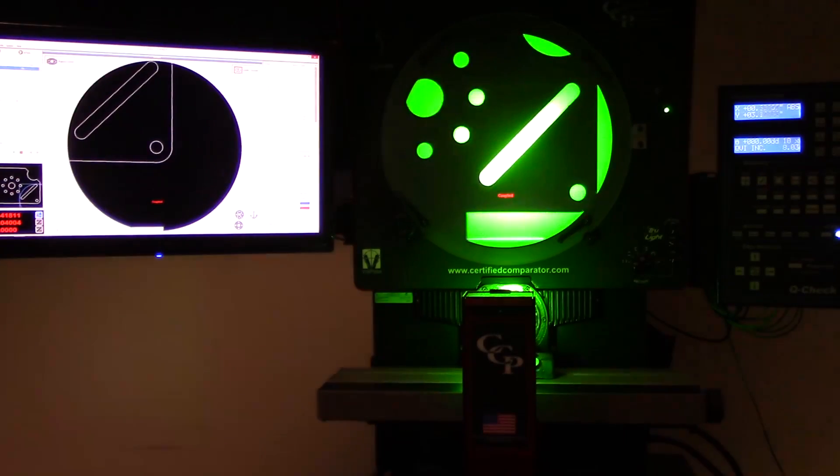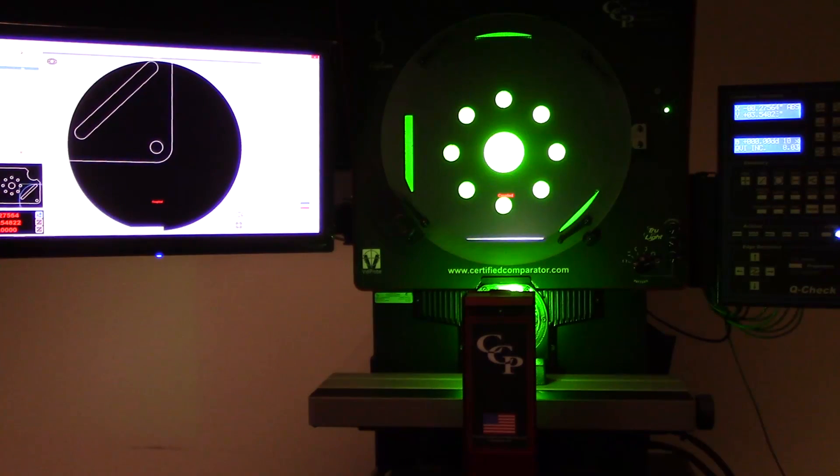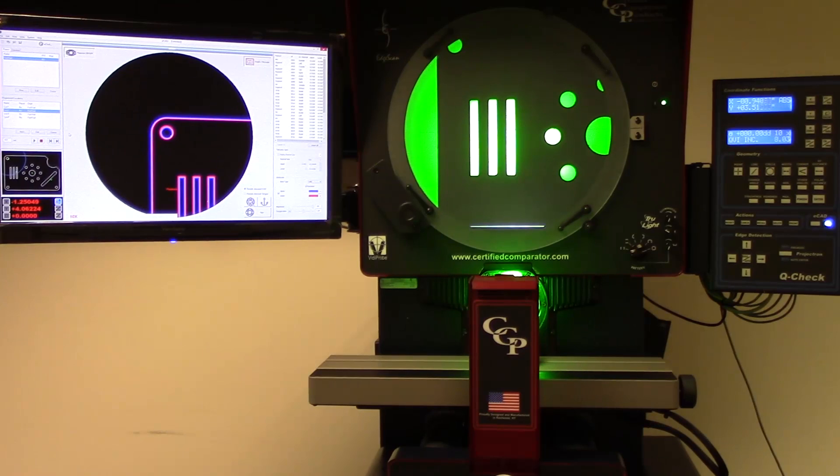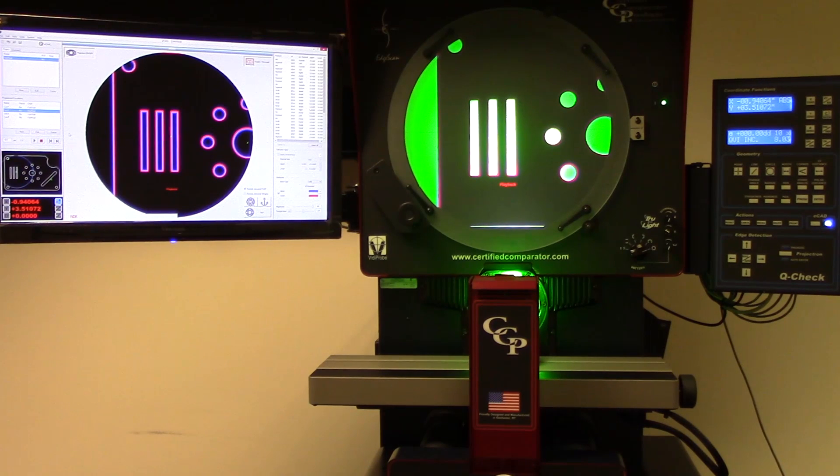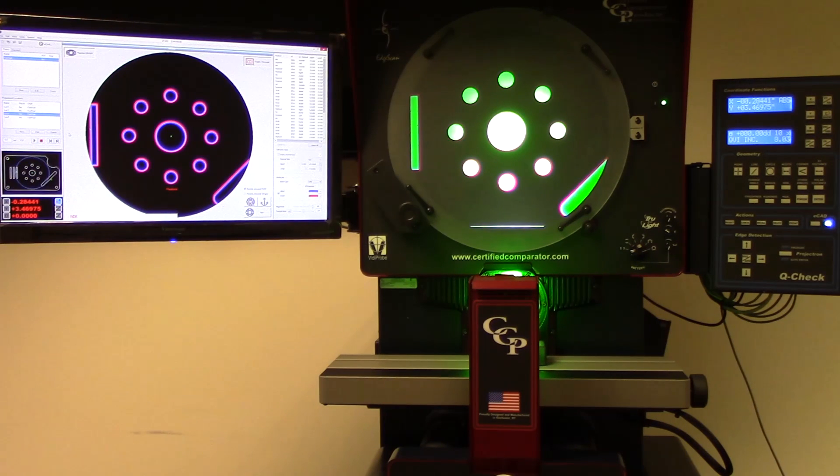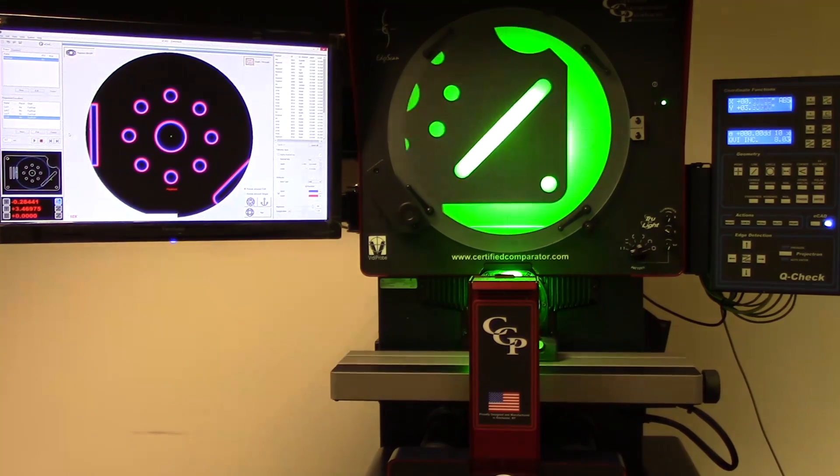Now, your part is set to be checked with ECAD. In an ECAD routine you are able to program multiple different positions where an operator can inspect the part. The ECAD lines snap to the part as it moves along, allowing you, instead of changing multiple overlays, to just have one DXF file.